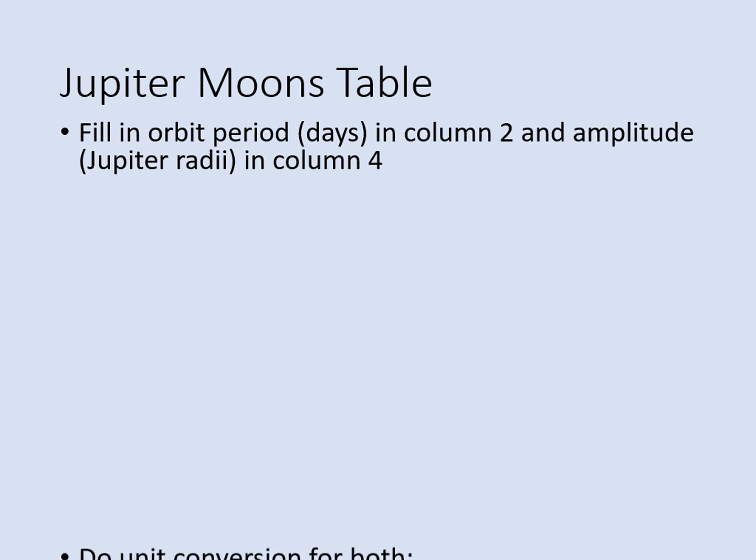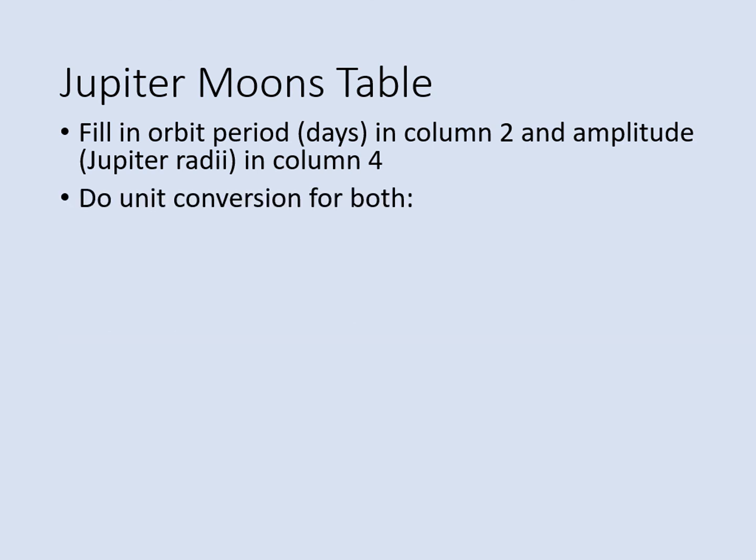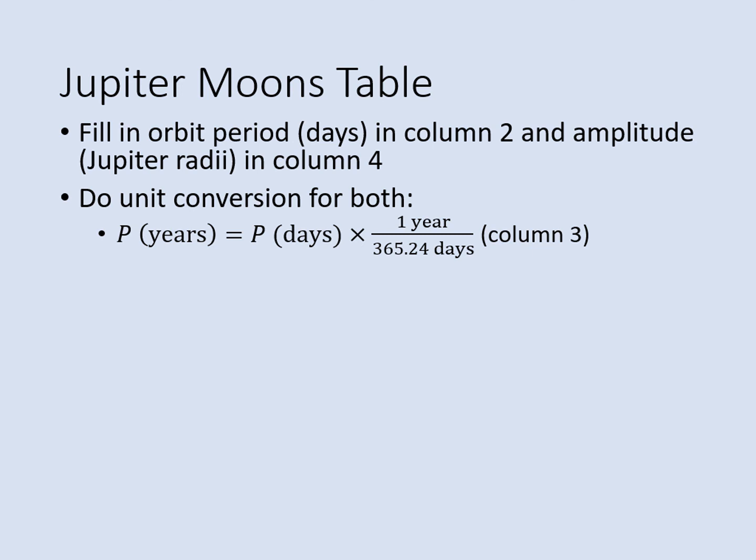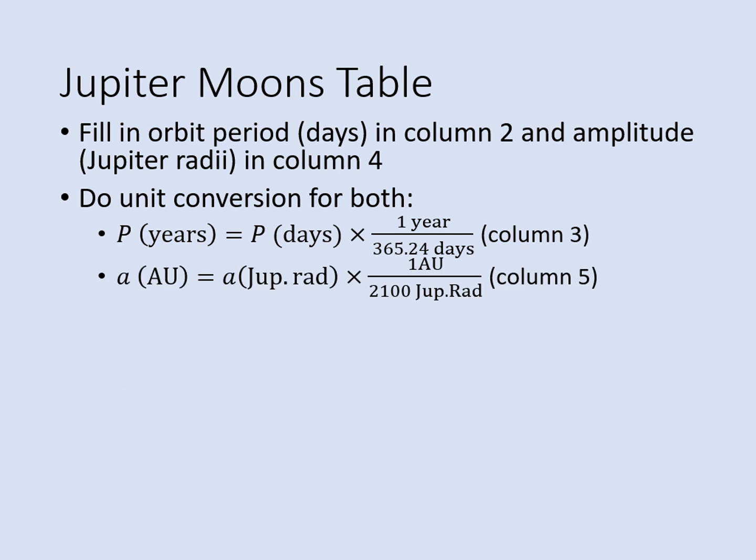The next step will be to convert your measurements into units that make it easy to find the mass of Jupiter. To do this, we need to convert the period of the orbit into years — here's the unit conversion formula we use to do that, and put the answer into column three. Next, we convert the amplitude into astronomical units, or AUs. This is the formula that lets us do that, and when you've done that conversion, put the result into column five.